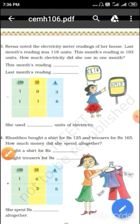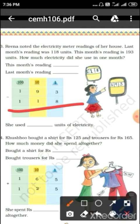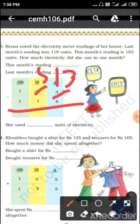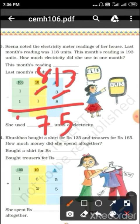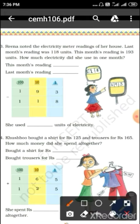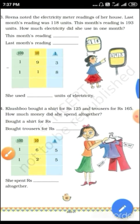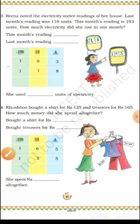So 193 minus 180 — these are ones, these are tens, and these are hundreds. 3 minus 3 is 0 in ones. In tens, write 30 above 9, so 30 minus 8 is... borrow and calculate: 30 minus 8 is 5, and 8 minus 1 is 7, and 1 minus 1 is 0. So the answer is 13 units.